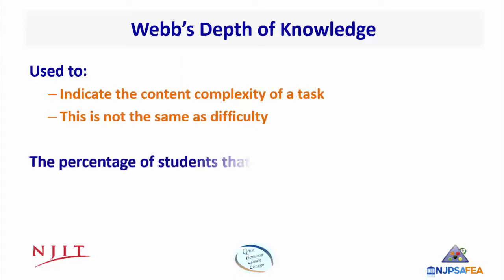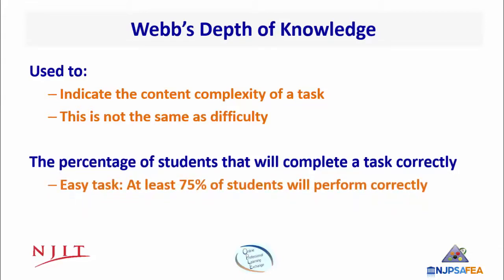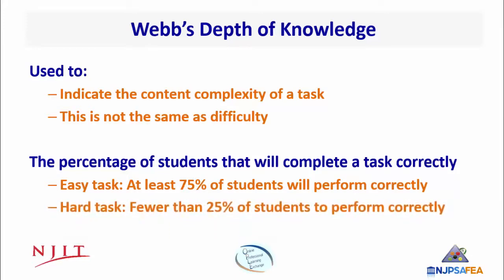Difficulty generally refers to the percentage of students that will complete a task correctly. An easy task, for example, is one which we expect at least 75% of students to perform correctly. A hard task, on the other hand, is one we expect fewer than 25% of students to perform correctly.